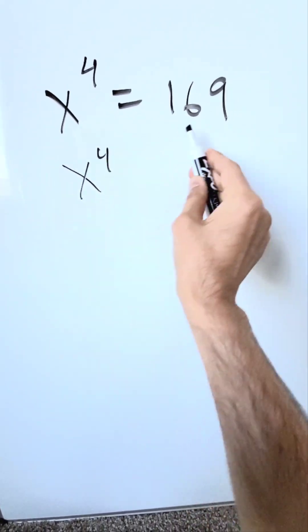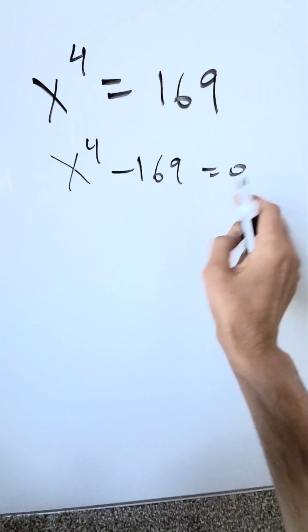Convert this into an equation, x to the power 4, by pushing this on the other side, minus 169 is equal to 0. Now it's better.